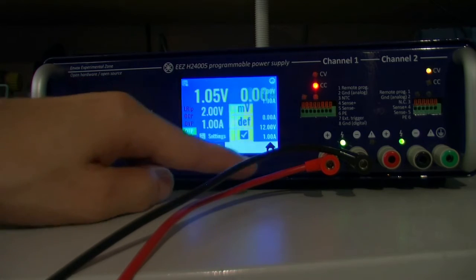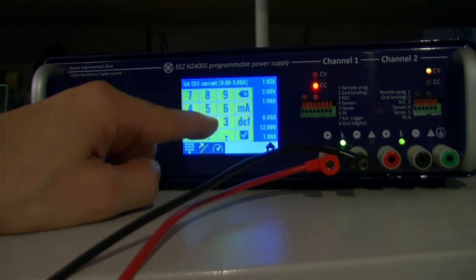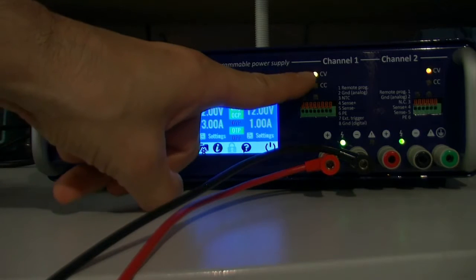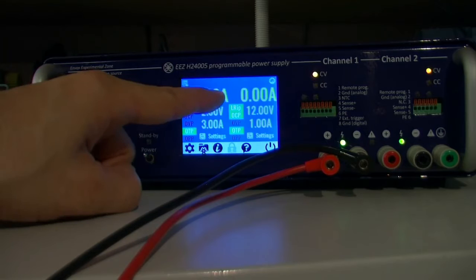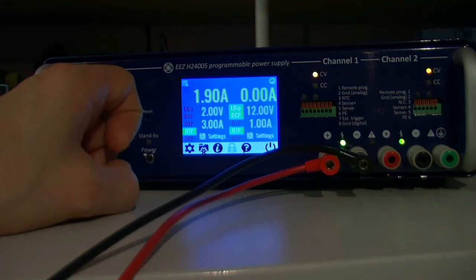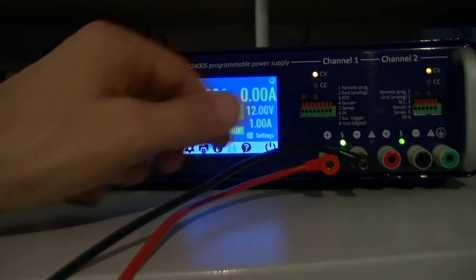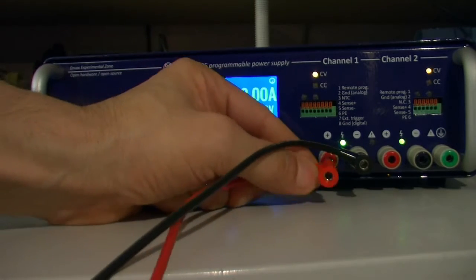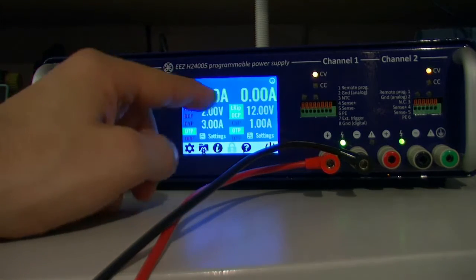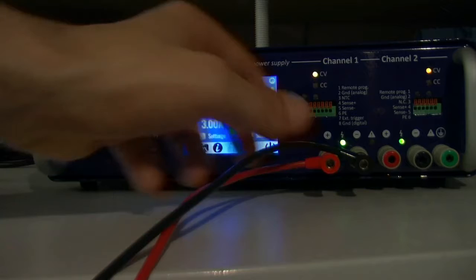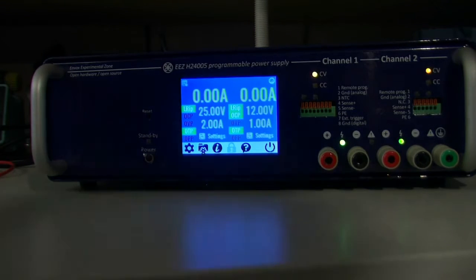But if I put it down below like this, now it enters constant voltage mode. Instead of presenting voltage here, we have current. It is useful and works nicely, so you can see what's going on on that channel.